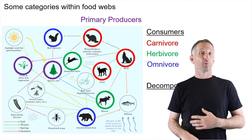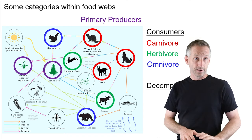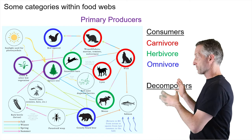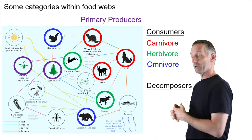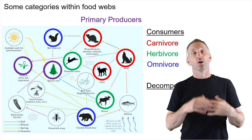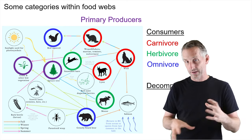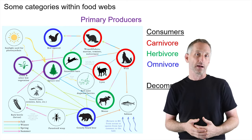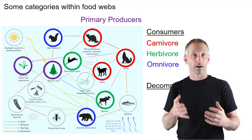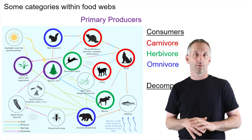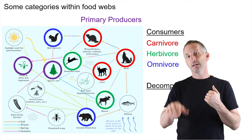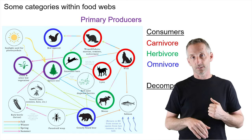Finally, you have decomposers, which break everything down. Many insects will break things down, and in particular bacteria and fungi will break down other organic matter and recycle it into the system.